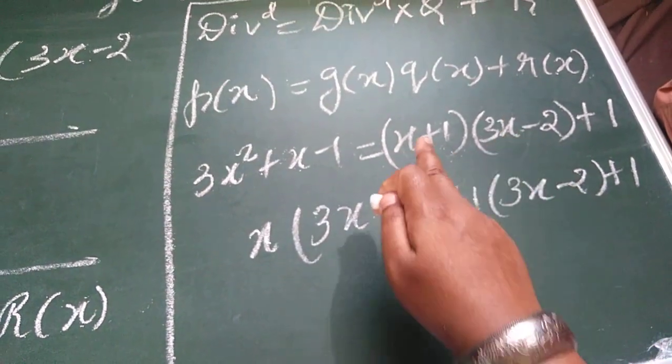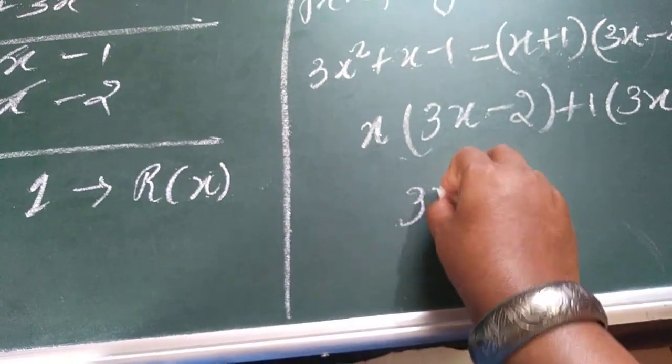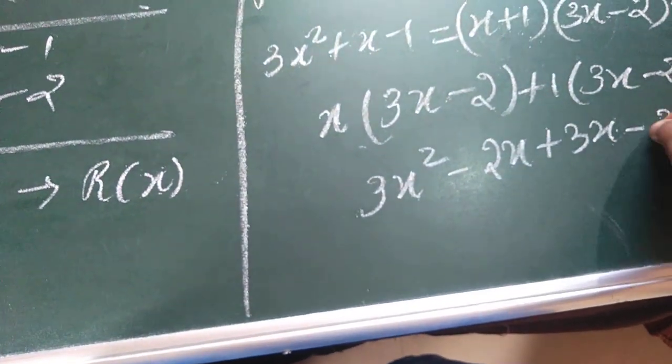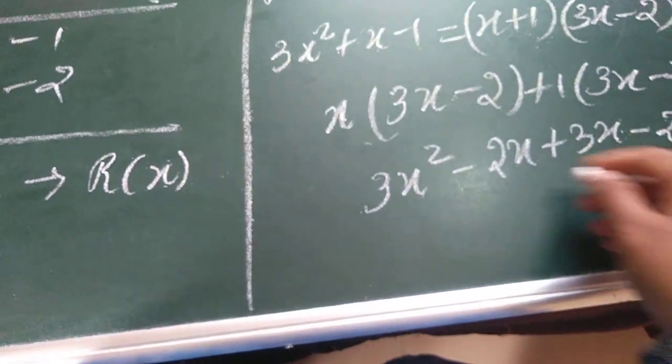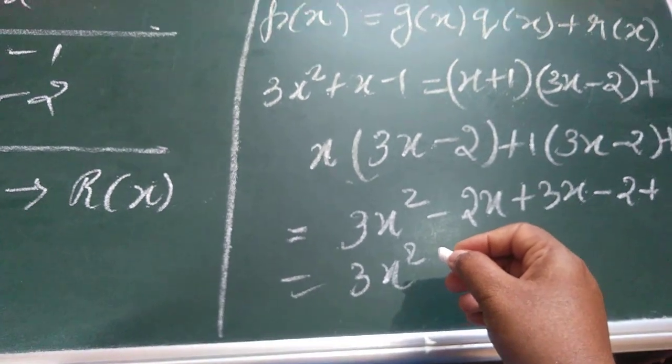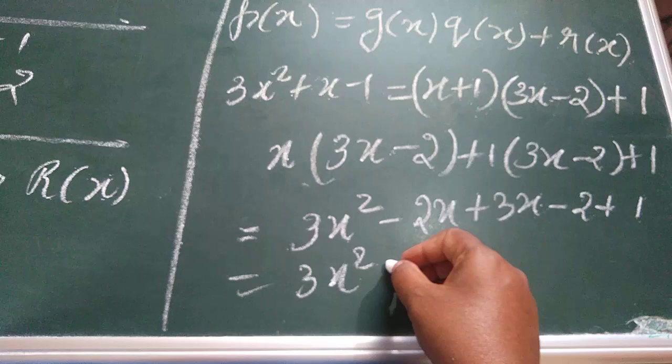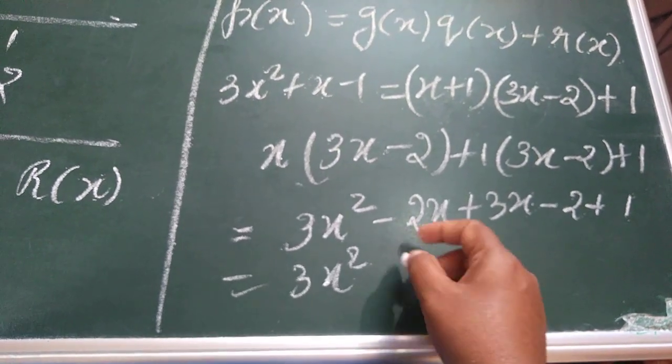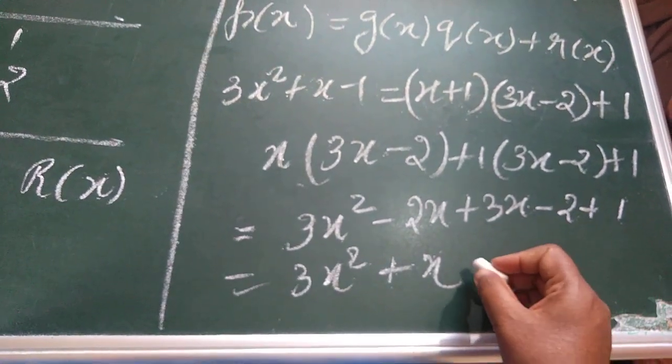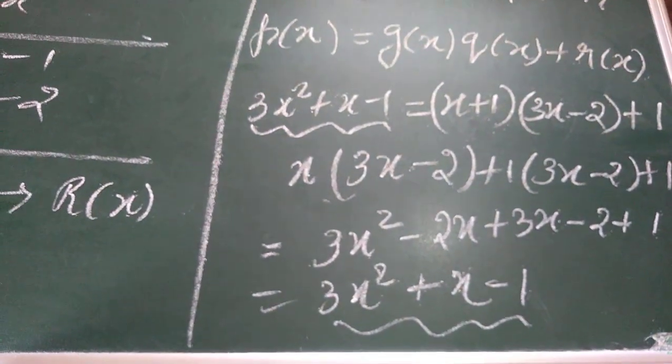Now, x square term is only 1, that is 3x square. You have to either add or subtract the like terms, children. Now, 3x minus 2x, answer is 1x. Next, minus 2 plus 1, answer is minus 1. Hence, LHS equal to RHS. Hence, our answer is correct.